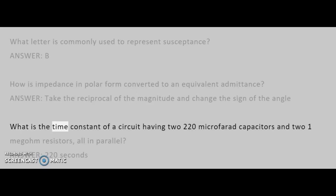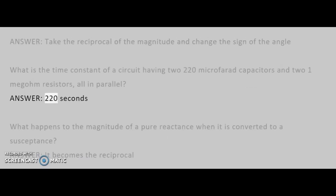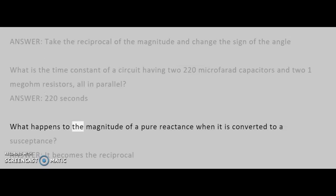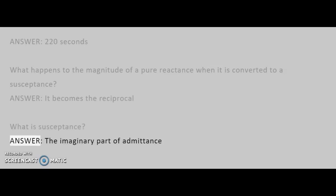What is the time constant of a circuit having two 220 microfarad capacitors and two 1-megohm resistors, all in parallel? Answer: 220 seconds. What happens to the magnitude of a pure reactance when it is converted to a susceptance? Answer: It becomes the reciprocal. What is susceptance? Answer: The imaginary part of admittance.